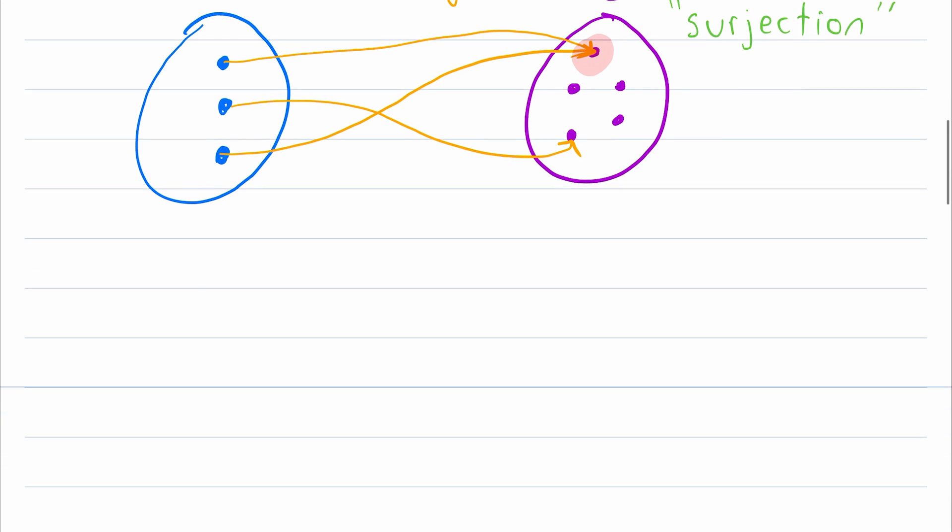Now let's take a quick look at how we might prove a more concrete example of an injection. Let's say our function F maps the real numbers to the real numbers, and it's defined like this. F of x is equal to 2x.